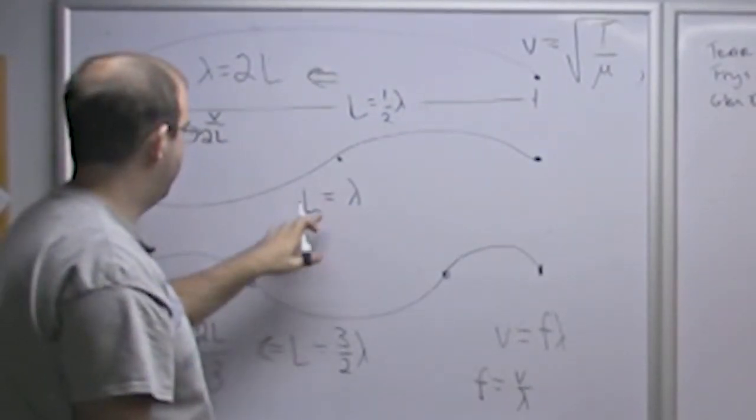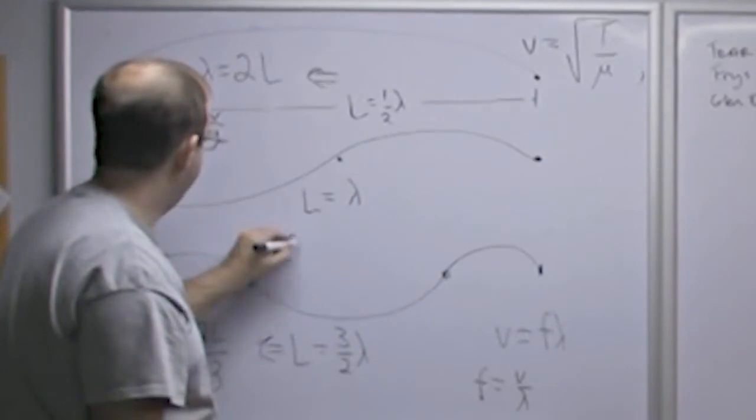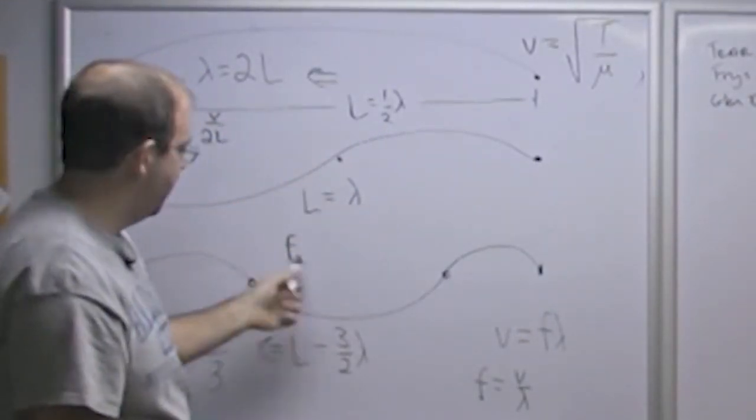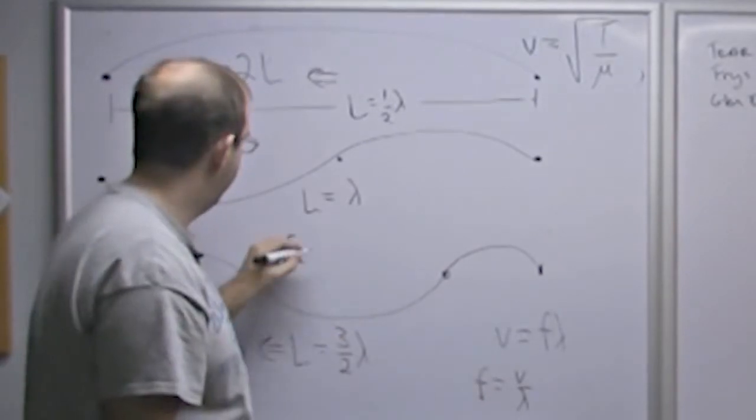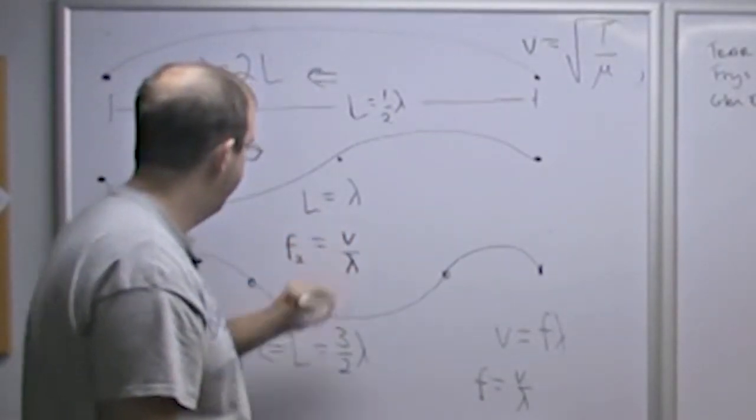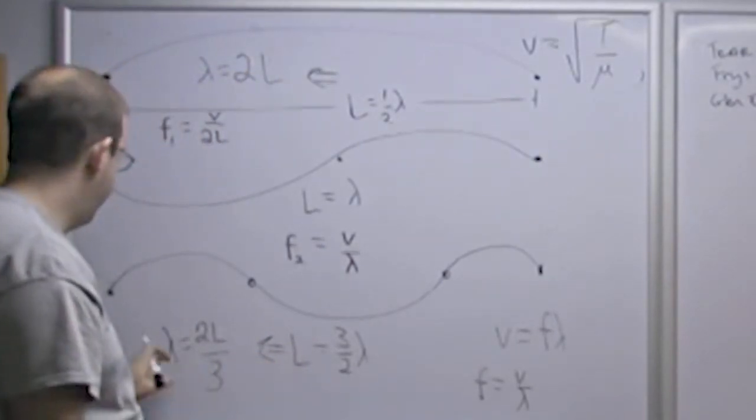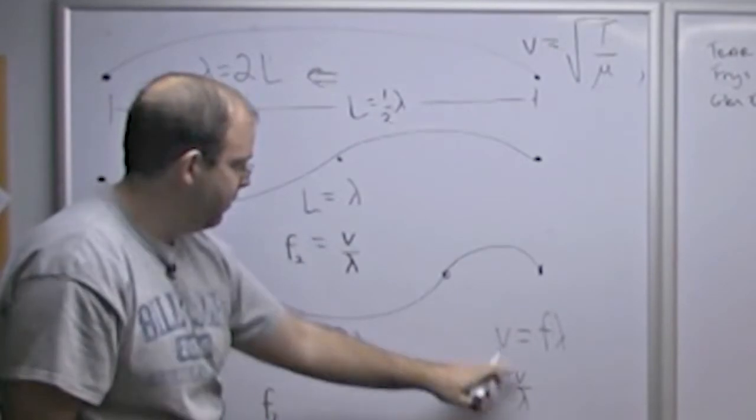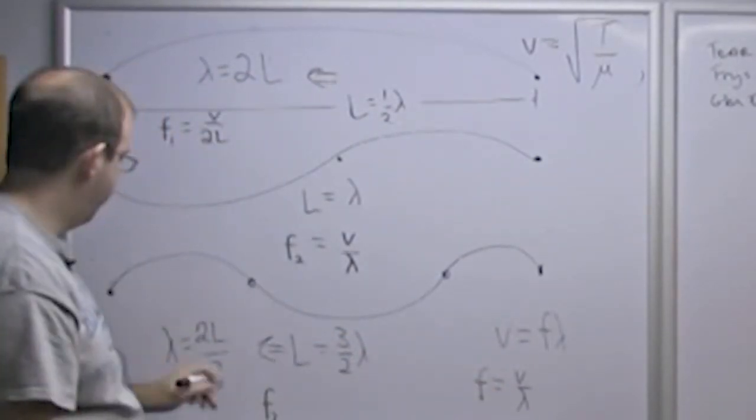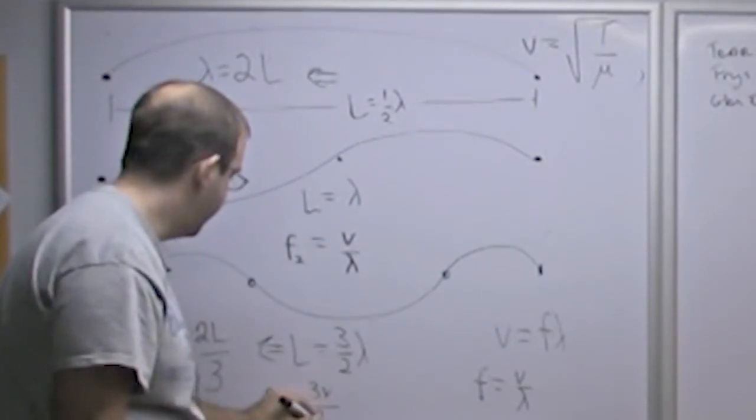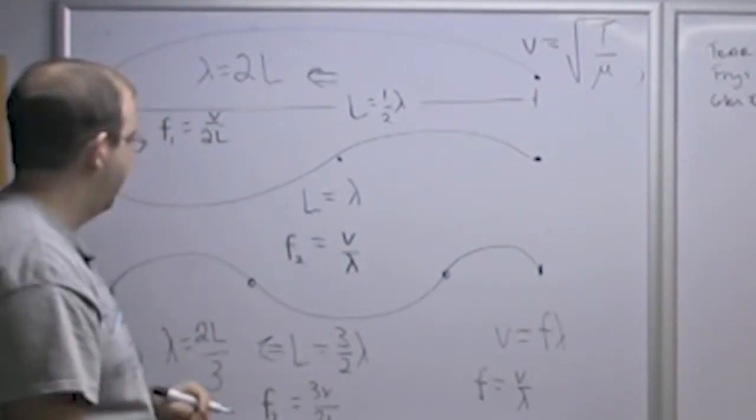This one, lambda is equal to L. So F is equal to, we'll call this F2, it's the second resonance. So F2 is equal to just V over L. And then here, let's call this F3. F3, V over lambda. Lambda is 2L over 3. So this is going to be 3V over 2L.